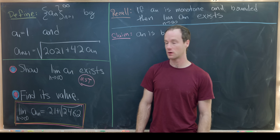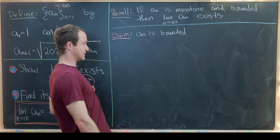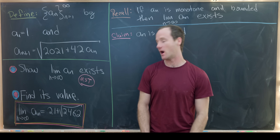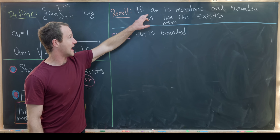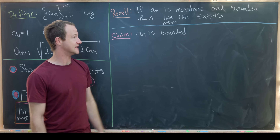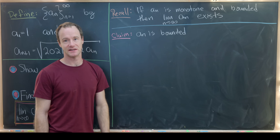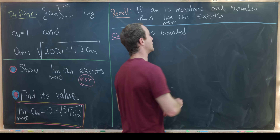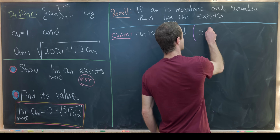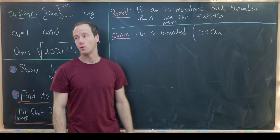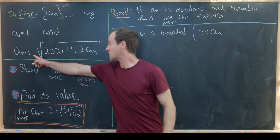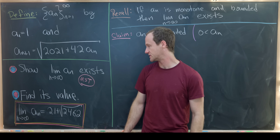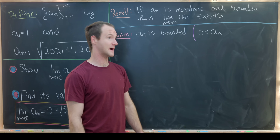We did this out of order because we're using the Monotone Sequence Theorem: if a sequence is monotone and bounded, its limit exists. We'll prove both conditions. For boundedness, we first show it's bounded below by zero — each a_n is at least the square root of 2021, which is positive. Now we need a nice upper bound.